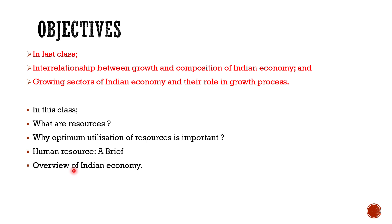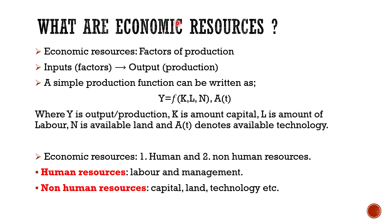Economic resources are actually the factors of production. As we have already gone through a simple production function — Y is a function of capital, labor, and available land, where A denotes available technology — these are the inputs. When we combine these inputs in a predefined proportion, we get output, that is, production.